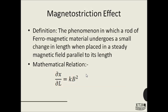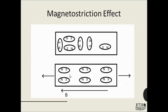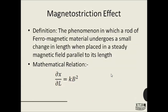The definition goes like this: the phenomenon in which a rod of ferromagnetic material undergoes a small change in length when placed in a steady magnetic field parallel to its length. So as the magnetic field is applied, the molecules arrange themselves and as a result the length of the rod increases. The mathematical relation is: change in length per unit original length equals k times B squared, where B is the applied magnetic field. So the change in length is a function of the square of the applied magnetic field.